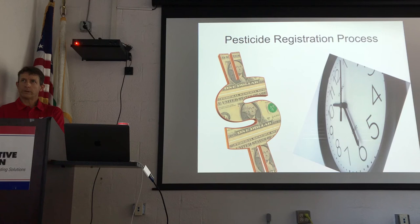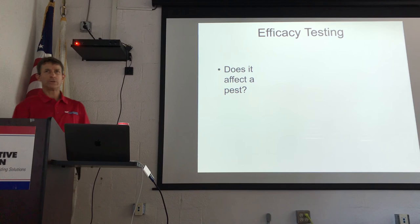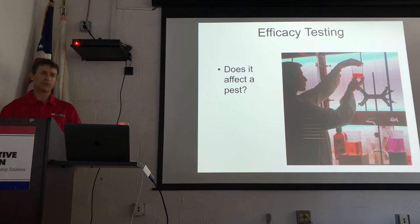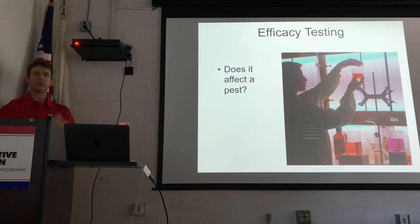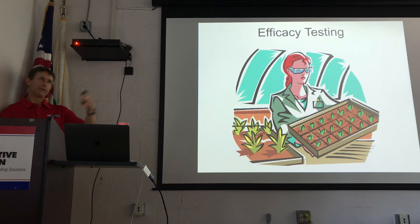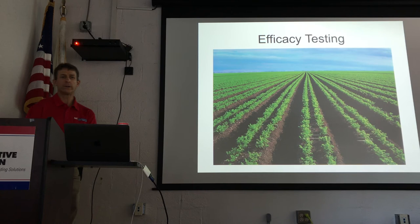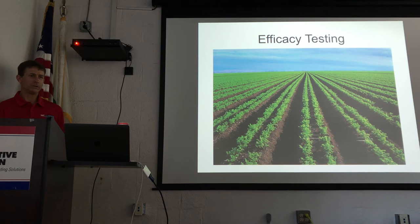Efficacy testing starts in a lab — does it affect the target pest? A chemist develops a new compound and essentially drops it on a caterpillar to see if there's an effect on the weed, insect, or disease. After laboratory testing, they take it to a greenhouse and then to small, controlled field plots.